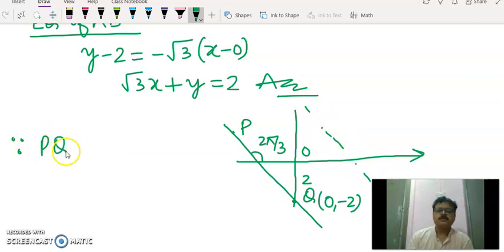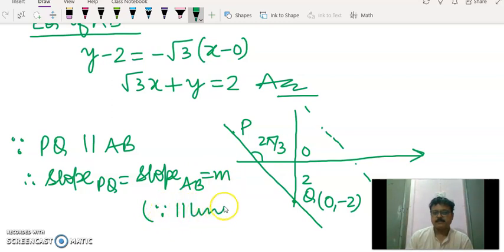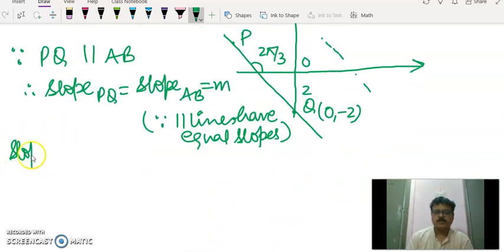Since PQ is parallel to AB, therefore slope of PQ is equal to slope of AB is equal to m. Since parallel lines have equal slopes, correct, so slope of PQ will be minus root 3. So hence equation of PQ will be